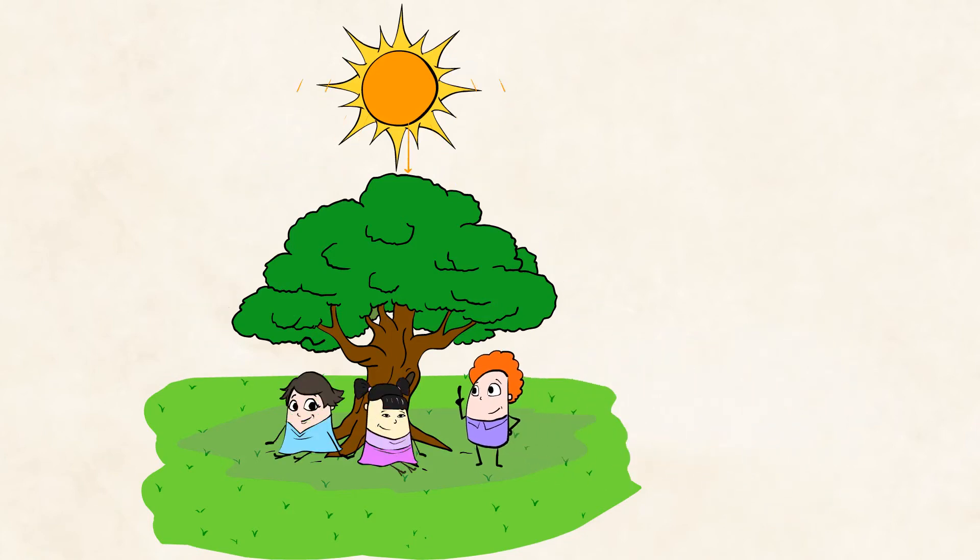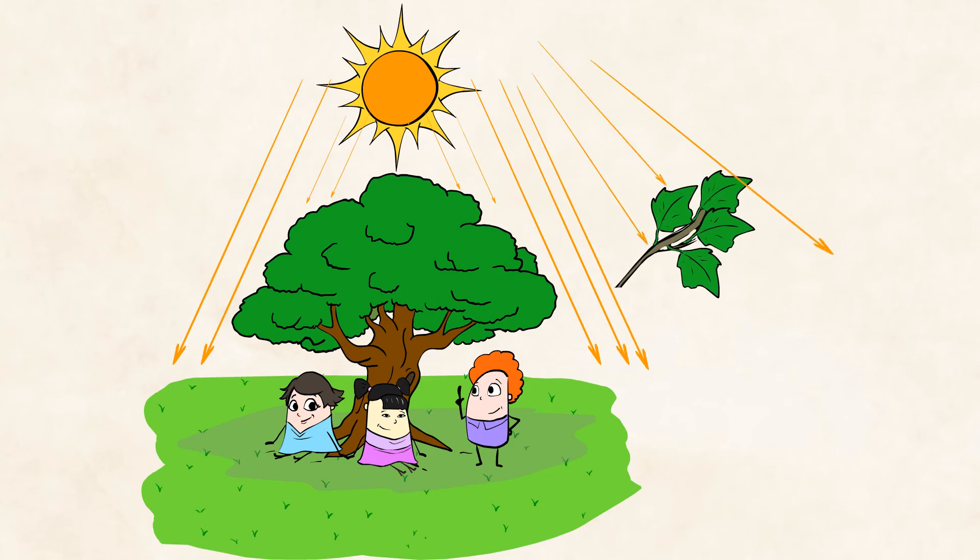Sunlight touches everything on Earth, unless something else gets in the way. When light is blocked by an object, like the leaves on this tree, it can't pass through. The leaves block the sunlight and create shade.